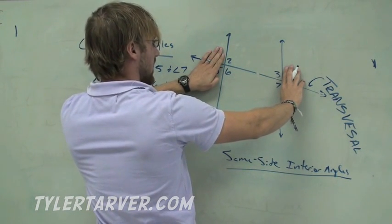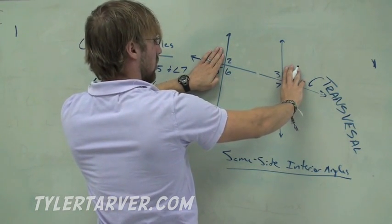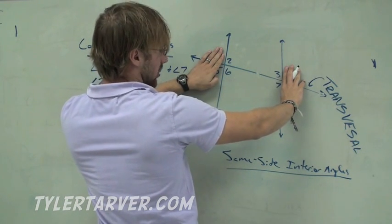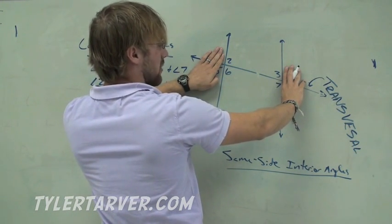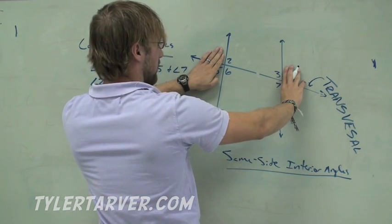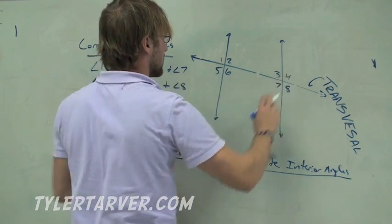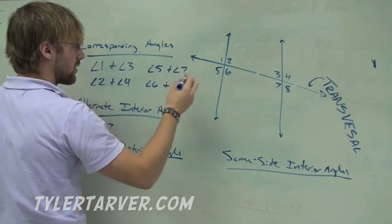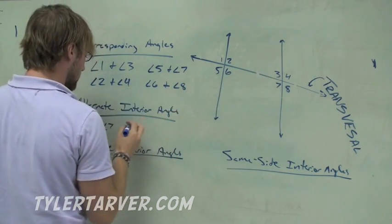What would be on the other side of 2? 7. Correct. 2 and 7 are alternate of that transversal and they're also both on the inside. Therefore, they are alternate interior. So angle 2 and angle 7. And then the other ones would be 6 and 3 because they're alternate interior.